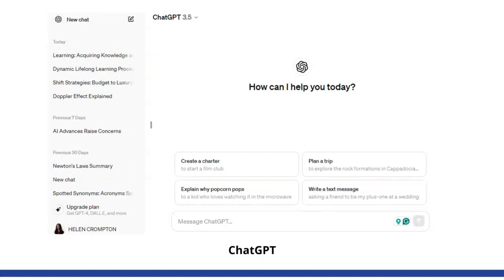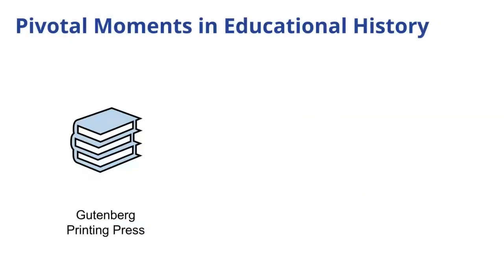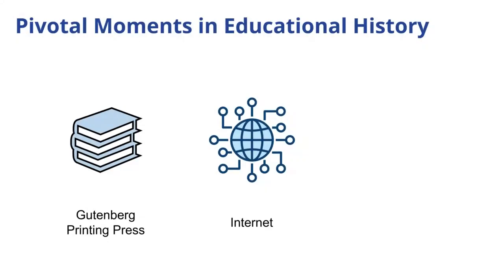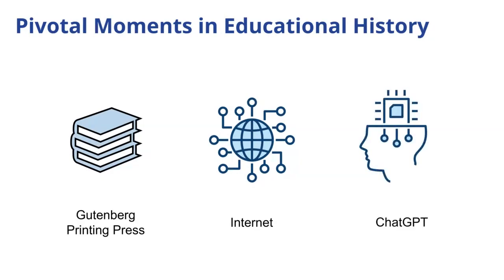There have been three major changes in history to information that changed education. The first was the Gutenberg printing press, getting knowledge out to everybody. The second was the internet — that caused a great stir. People worried about students checking what instructors say and plagiarism: just grabbing content and pasting it into an assignment. And the third major change is generative AI — ChatGPT.